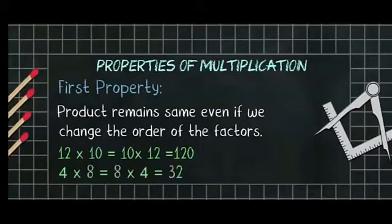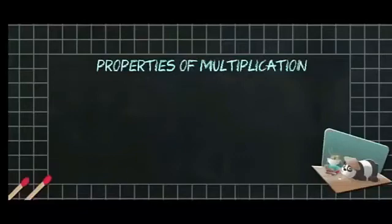Now 4 into 8 is equal to 8 into 4. The answer is the same as 32. Now the second property.